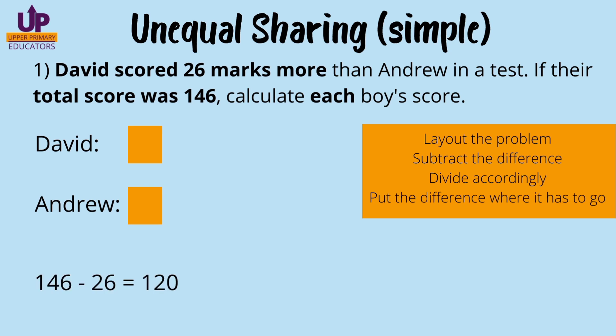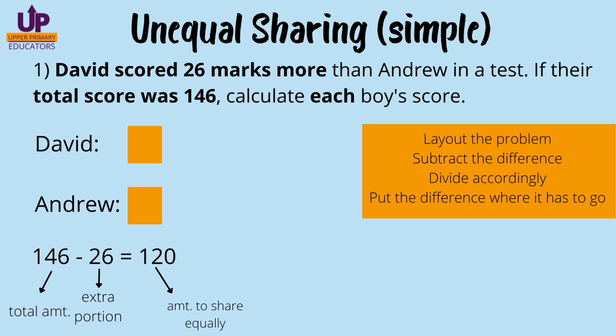Next, we subtract the difference. The difference is the extra portion — whatever is the extra portion is the difference. So David scored 26 marks more than Andrew, so 26 would be the extra portion, the extra number of marks. So 146 subtract 26 leaves us with 120. It's very important that we understand what each number represents.